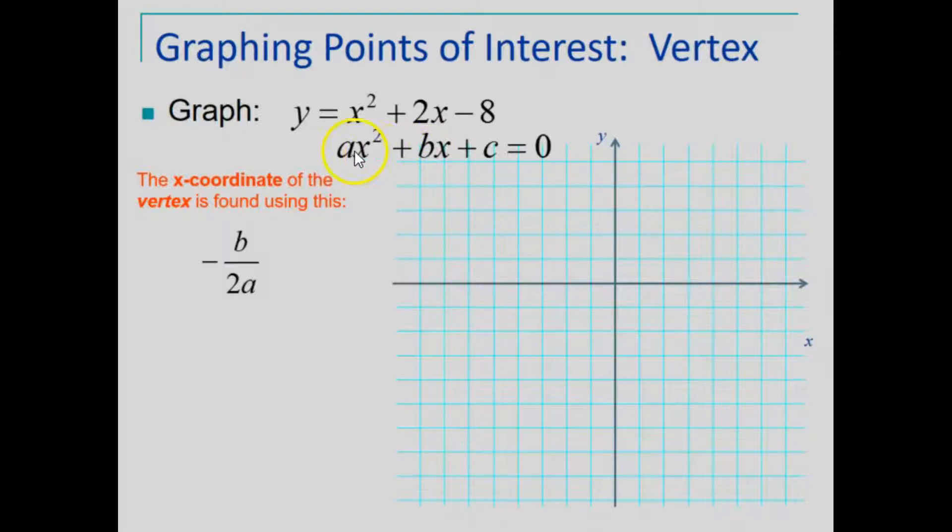So we have the value a equals 1, b equals 2. Replacing that in this ratio and simplifying gives us an x-coordinate of the vertex of negative 1.